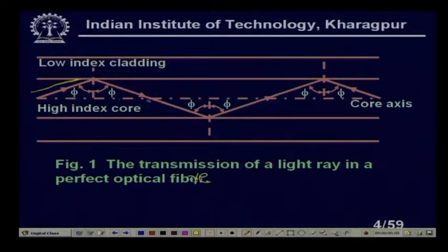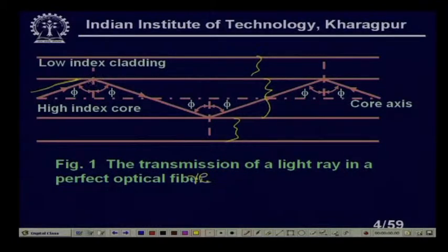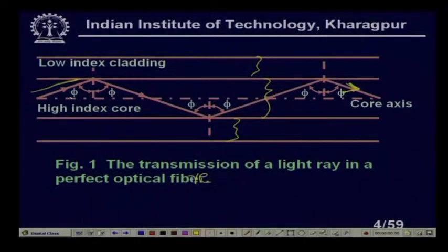The refractive index of the core is higher than that of the cladding, and incident light is arranged to fall in such a way that the light gets total internal reflection. So it will follow a zigzag fashion. This phi should be greater than the critical angle of incidence, because if it is not more than the critical angle there will be no total internal reflection. Even if the fiber is bent, light can still travel through it — that is the idea of the optical fiber.